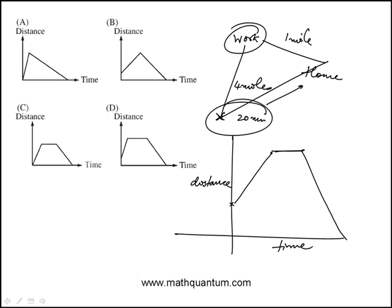to the home is going to decrease and then go to zero. So it's going to be some function like that, which is closest to answer choice D.